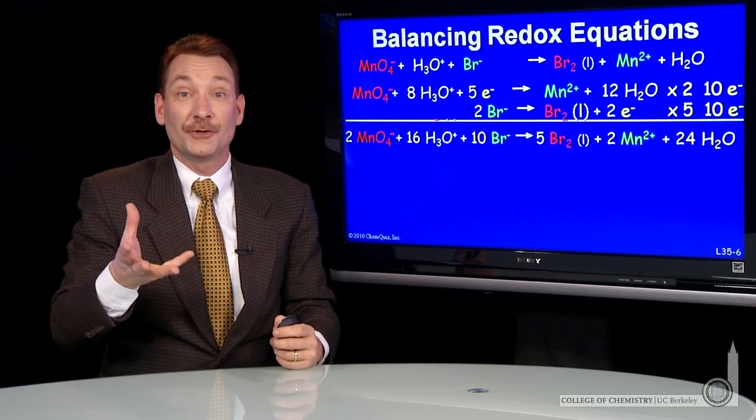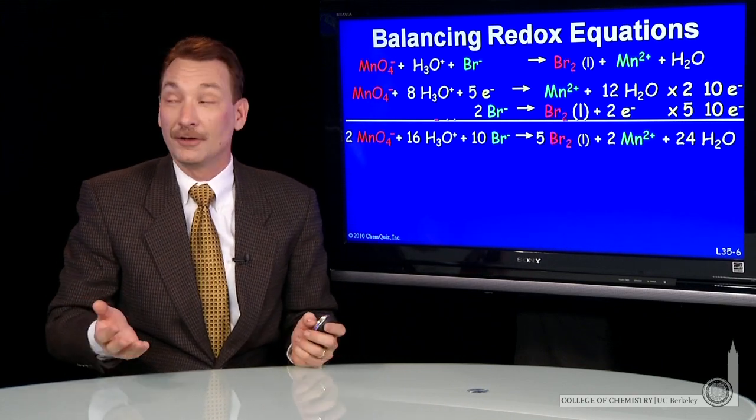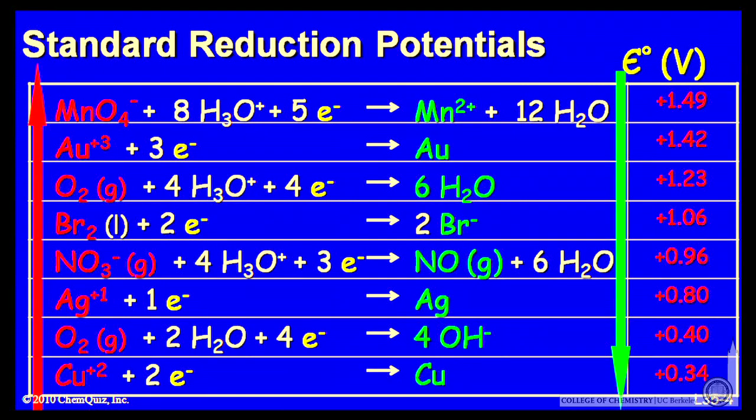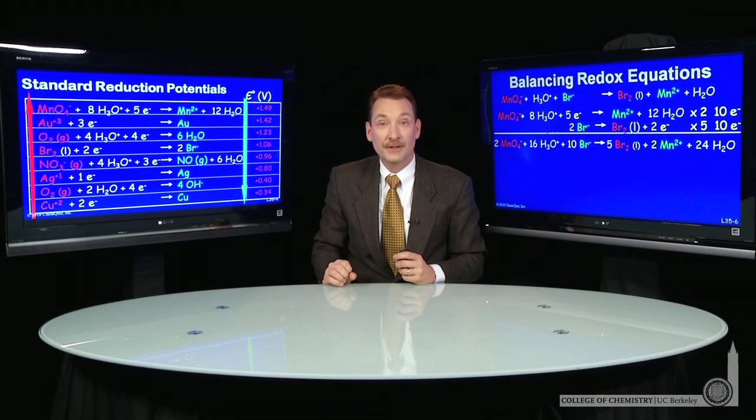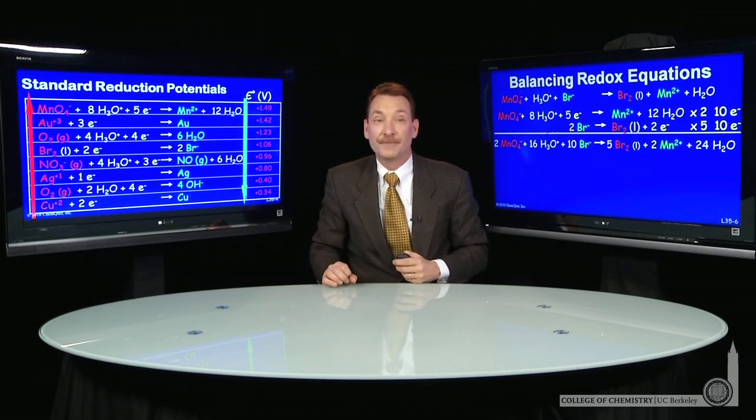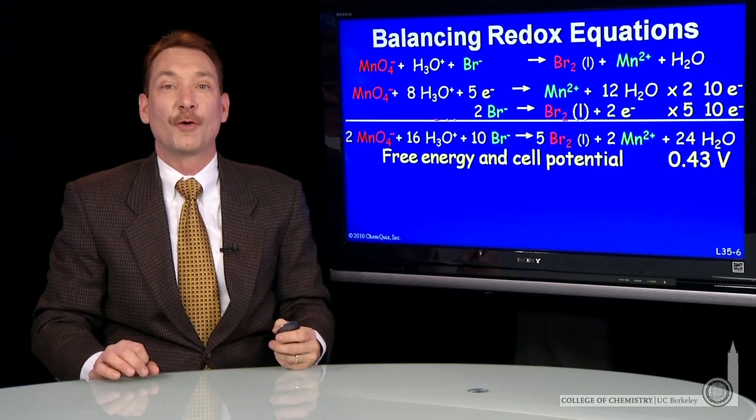Now, we can also calculate the relative cell potential for that. We can go back to our table. And when we do, we see that the permanganate reduction has a standard voltage of 1.49, the bromine a standard of 1.06. So the difference between those two is the overall cell potential for our chemical reaction. So that overall cell potential, 0.43.